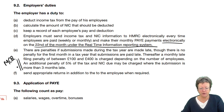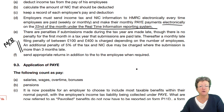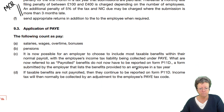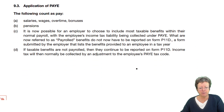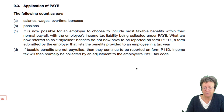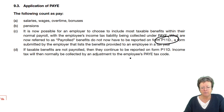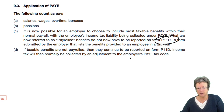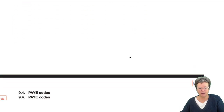Employers also need to send the relevant pieces of paper to the individuals who work for them at the end of the year. The PAYE system applies to wages, salaries, overtime, bonuses, and pensions. If they are dealing with benefits in kind, form P11D is the relevant form to be aware of.